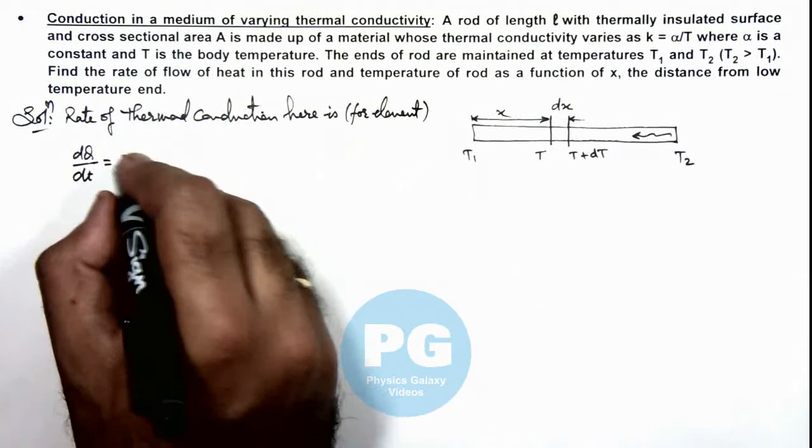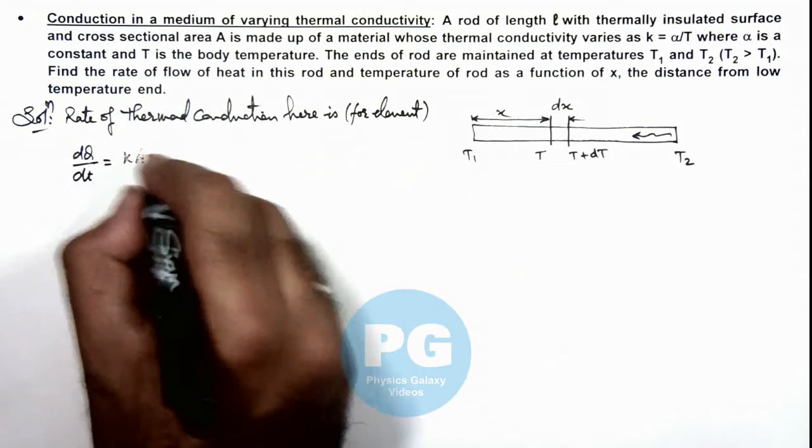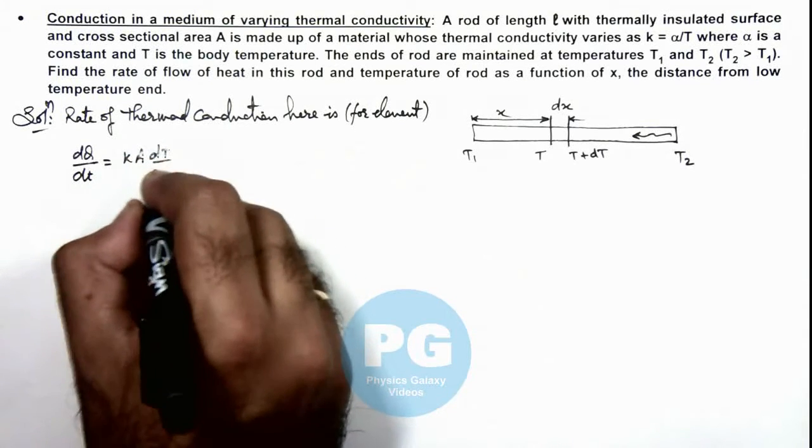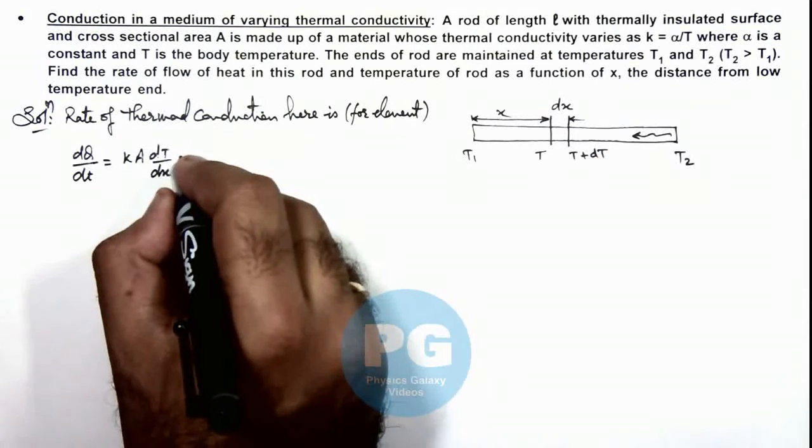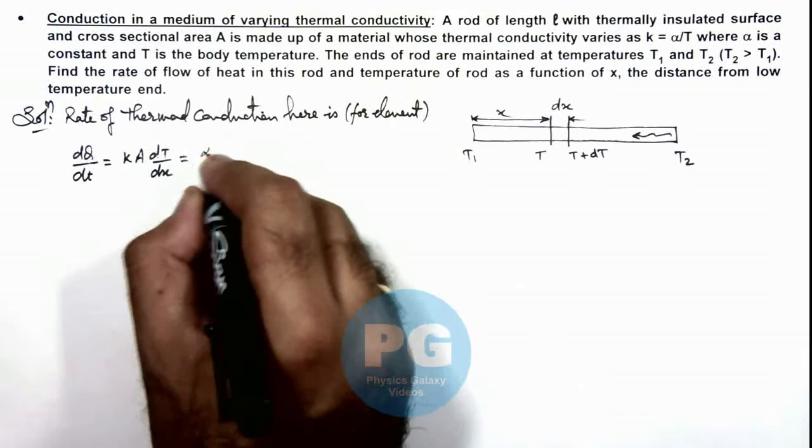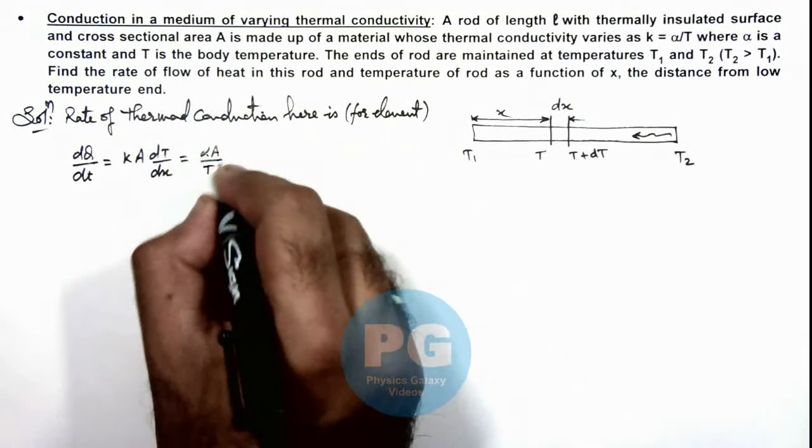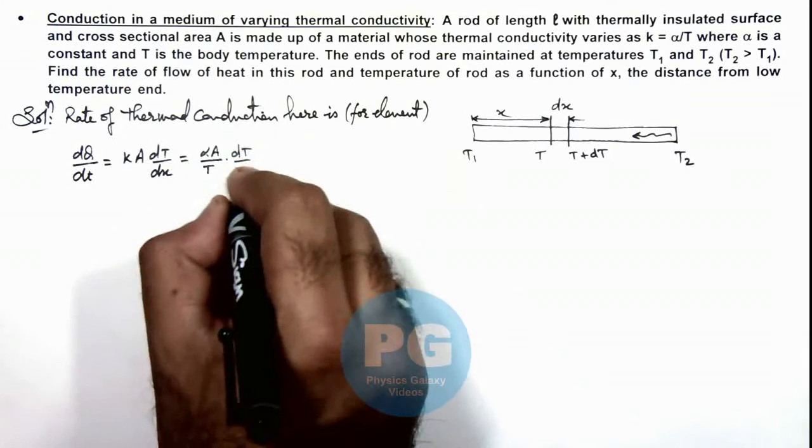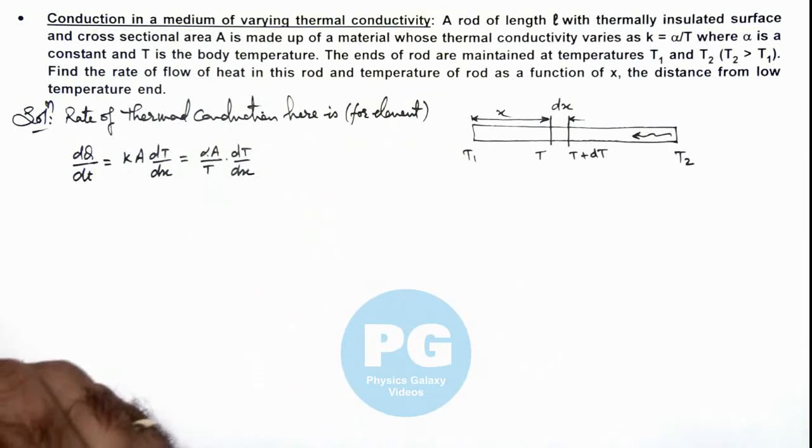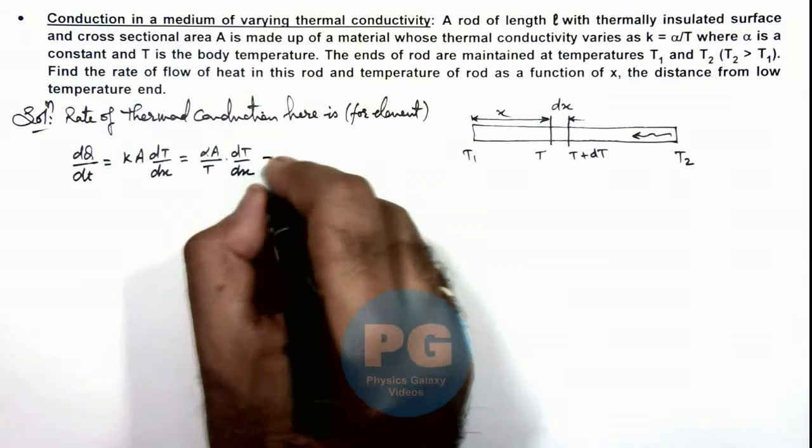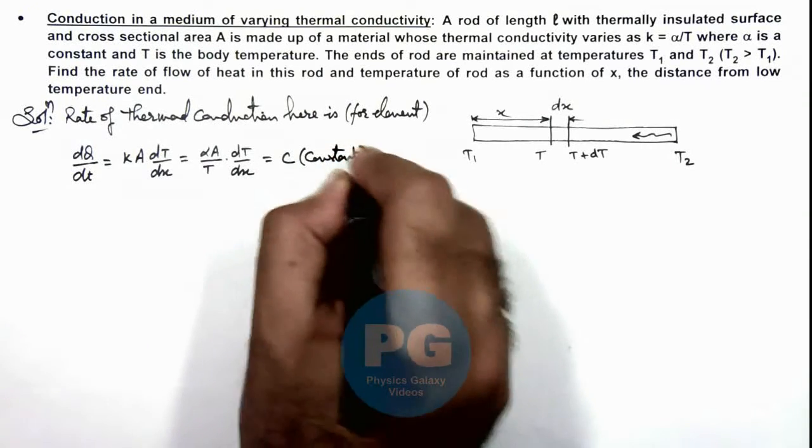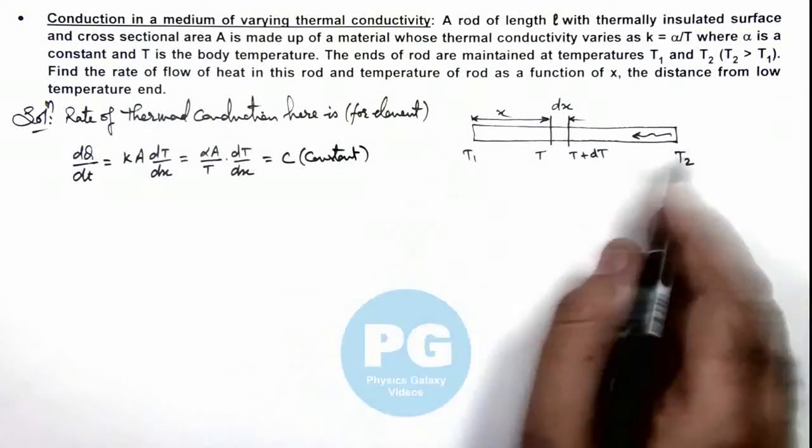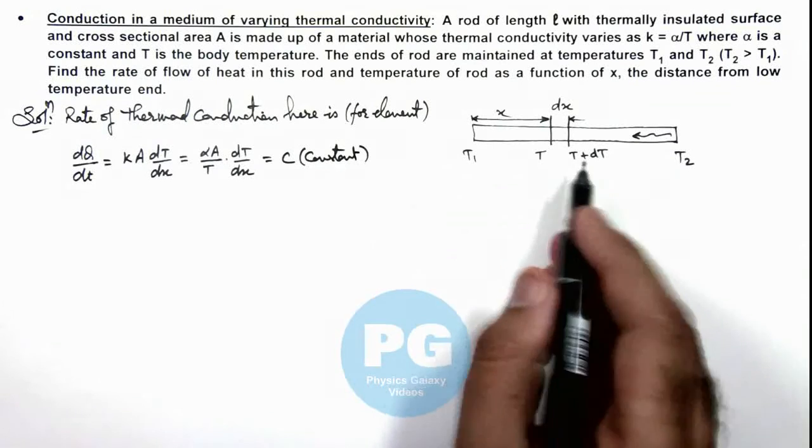This will be kA dT/dx. If we substitute the value of k which is also varying here, this will be αA/T multiplied by dT/dx. And throughout the rod this value must remain c, which we are writing as constant, because we assume the steady state of thermal conduction throughout the rod.